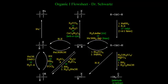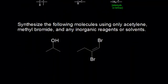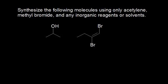Let's check out our problem: synthesize the following molecules using only acetylene, methyl bromide, and any inorganic reagents or solvents. We'll start with the 2-propanol molecule and think, how do I make this alcohol from acetylene? At first it's not so obvious what to do. One approach is to think backwards — this is called retrosynthesis. I'm going to draw a retrosynthesis arrow here.